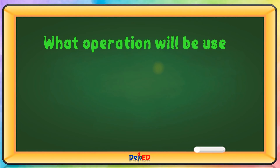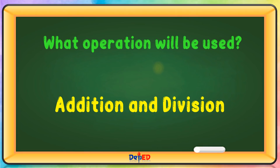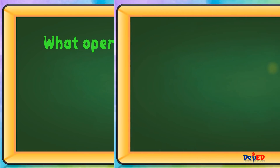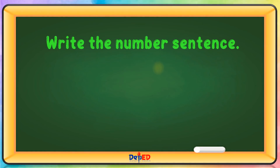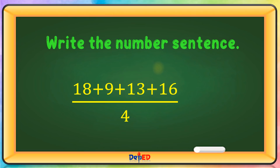What are the given facts? The weights of the four boxes of assorted chocolates and candies: 18 kg, 9 kg, 13 kg, and 16 kg. What operation will be used? Addition and division. Write the number sentence: 18 plus 9, plus 13, plus 16, divided by 4, equals?